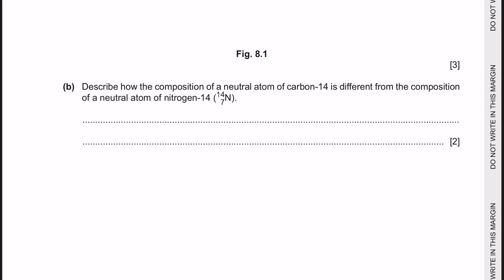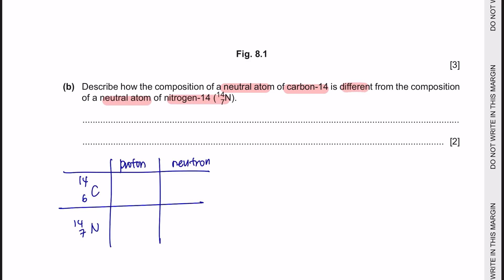Next question B: Describe how the composition of a neutral atom of carbon-14 is different from the composition of a neutral atom of nitrogen-14. There are 6 protons in carbon and 7 protons in nitrogen, 8 neutrons in carbon and 7 neutrons in nitrogen. So it's different in that there is an extra proton in nitrogen and one extra neutron in carbon.